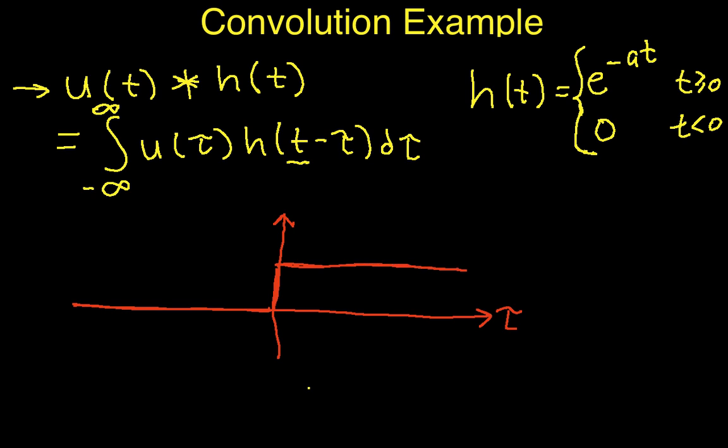h of t minus tau is going to look like this for some value t, and we'll assume now that t is greater than zero. We'll work the case where t is less than zero in just a minute.